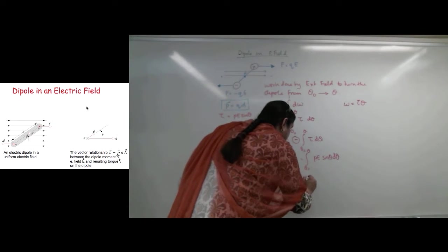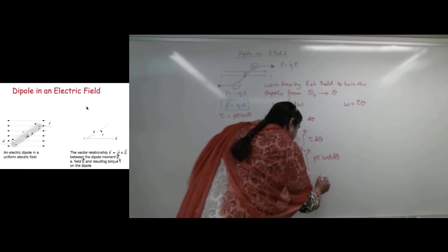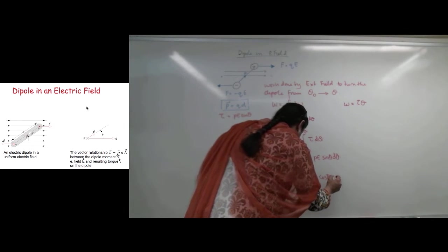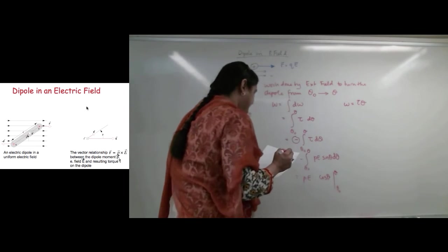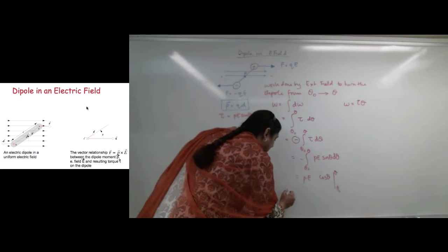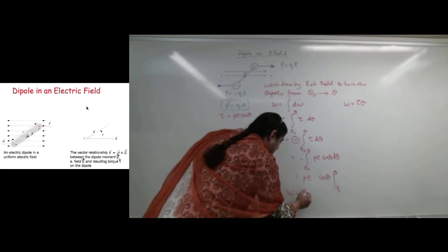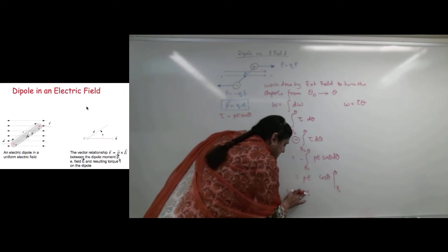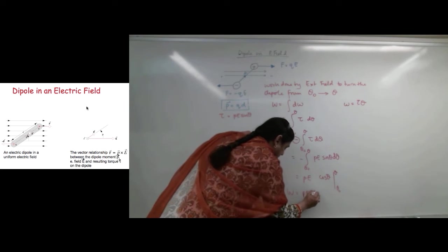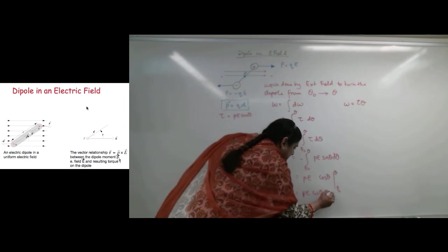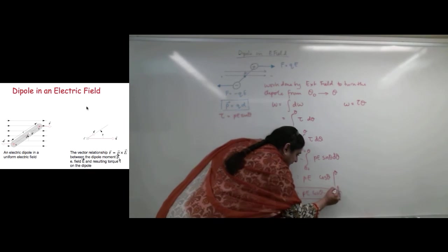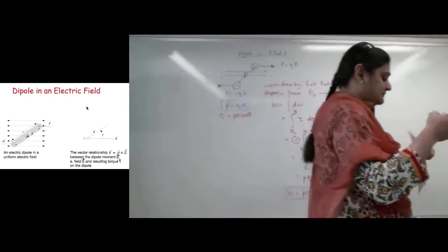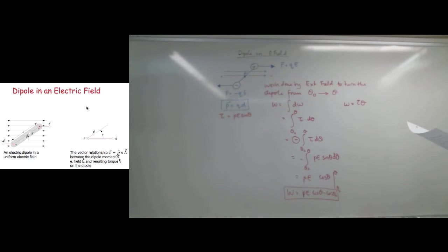Or, PE sine becomes equals to cosine theta, from theta 0 to theta. And then the work done will be PE, sorry, this should be a small p, dipole moment, cosine of theta minus cosine theta 0.